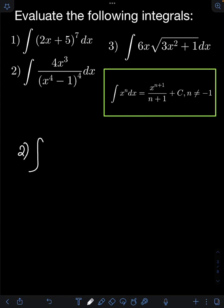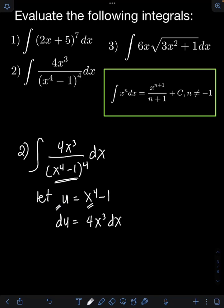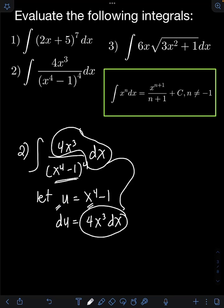For number 2, we have the integral of 4x cubed over quantity x to the 4th minus 1, raised to the 4th power, dx. Again, let's use u substitution. Let u be equal to x to the 4th minus 1. Get the derivative of both sides: derivative of u is du. Derivative of x to the 4th is 4x cubed by the power formula, minus derivative of 1 which is 0. So du equals 4x cubed dx.